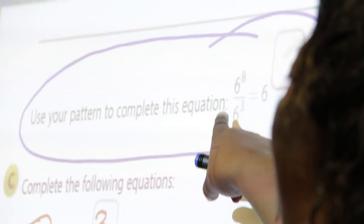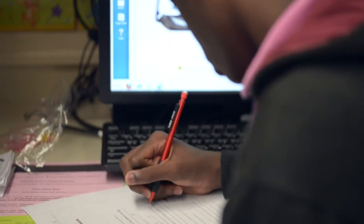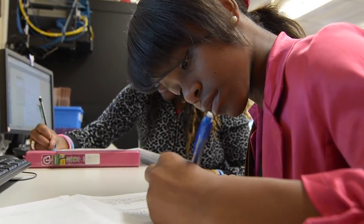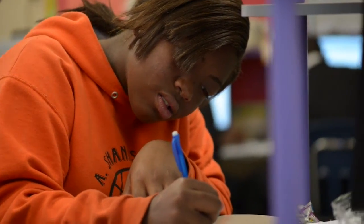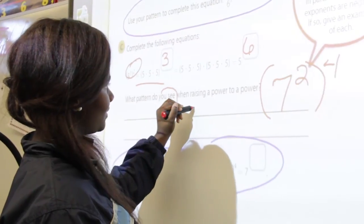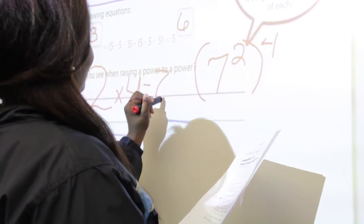Today we did a review of using patterns to come up with the values of integer exponents, and we took that pattern and applied it to solving a couple of problems so that we can see how, when you get a negative exponent, it is the reciprocal of the positive exponent. And when we get the zero power, any number to the zero power is one. We used that pattern to help students understand it, and we also used manipulatives on a different occasion to help them solidify their understanding of integer exponents.